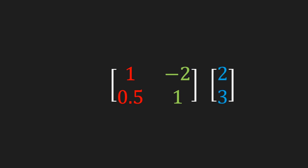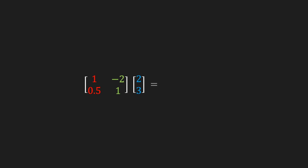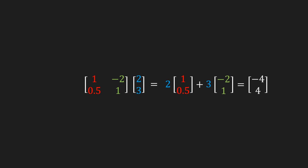If we now take a vector — for example 2, 3, the one we had earlier — and we want to know where it ends up after we transform it by our matrix, all we have to do is multiply our vector by that matrix. We take the product of the first column of our matrix with the first element of our vector, and add the product of the second column with the second element. This gives us negative 4, 4 — the same result we already calculated earlier.